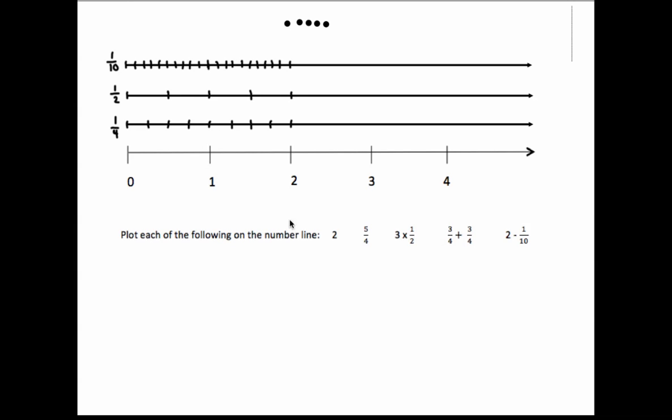So to plot 2, we would put a point right where 2 wholes were, because this is what 2 means: 2 wholes. So this would be 1 whole and 2 wholes, so we put a point right there.